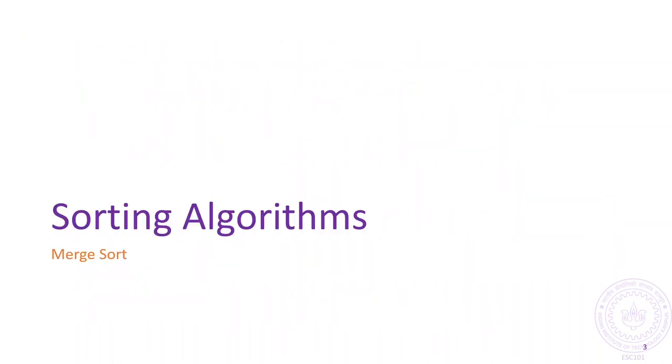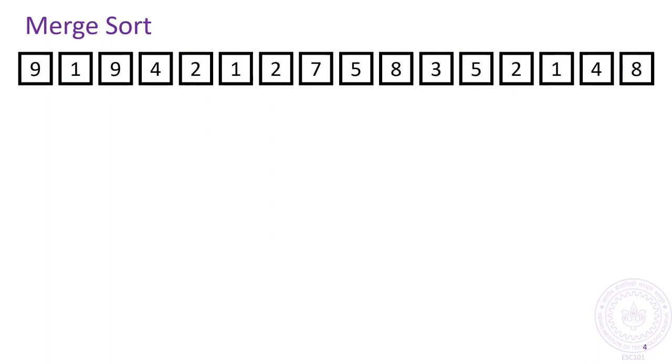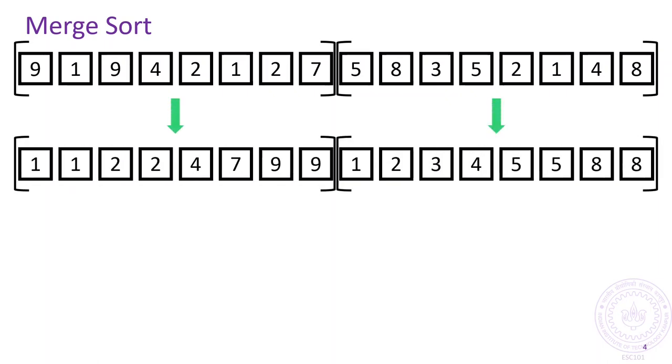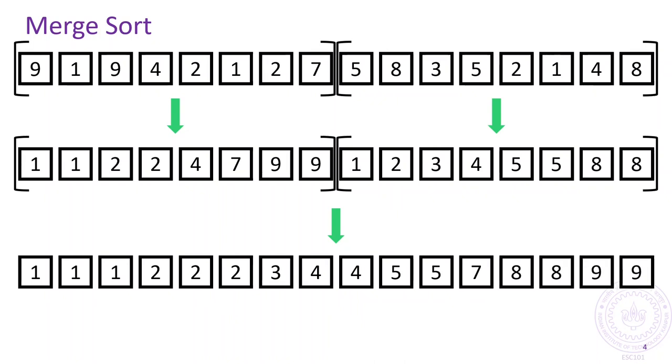Let's start with the merge sort algorithm. The idea behind merge sort is fairly simple. Given an unsorted array such as the one we see here, we divide the array into two equal halves. We sort the left half, then we sort the right half, and then merge these two sorted arrays to get the sorted version of the full array.